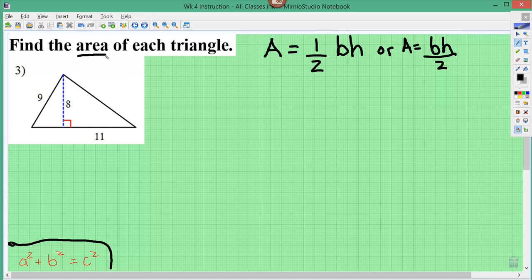So it says to find the area of each triangle. Well, first of all, you have to remember the formula for a triangle, which is area equals one-half the base times the height, or if it's easier for you to think about it this way, base times height, which essentially is the area of a rectangle divided in half.